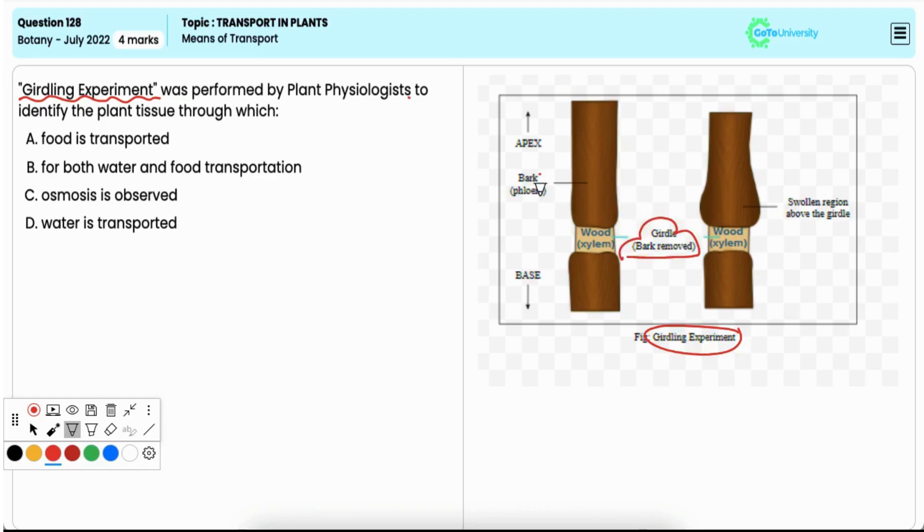from a plant stem. This stops the downward flow of food from the leaves to the rest of the plant, confirming that phloem is responsible for the transport of food—that is, sugars—in plants. Hence, it is the correct option.